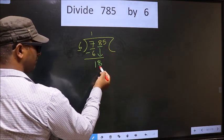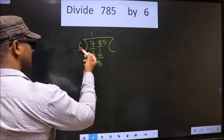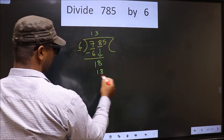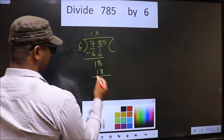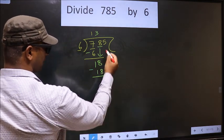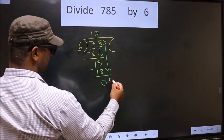Over here we have 18. Here 6. When do we get 18 in 6 table? 6, 3 is 18. Now you subtract. 18 minus 18, 0. Now you will bring down the beside number. That is 5 down.